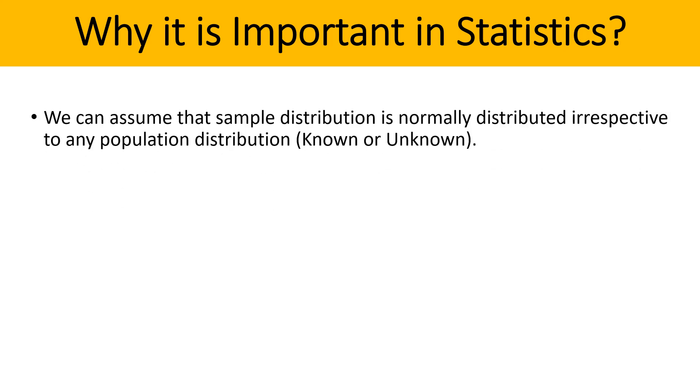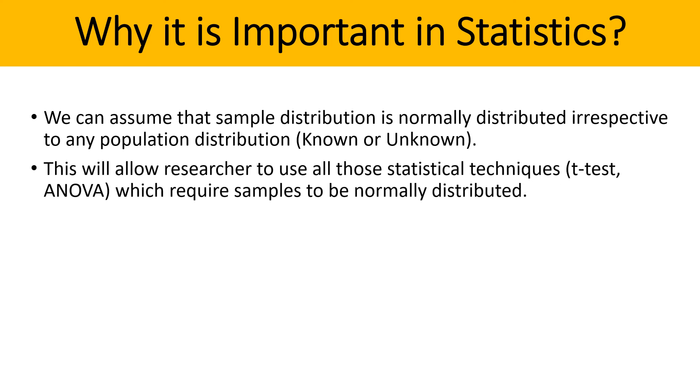We can assume that sample distribution is normally distributed irrespective of any population distribution, whether it is known or unknown. This will allow researchers to use all those statistical techniques like t-test and ANOVA which require samples to be normally distributed, although the population distribution may or may not be normally distributed.